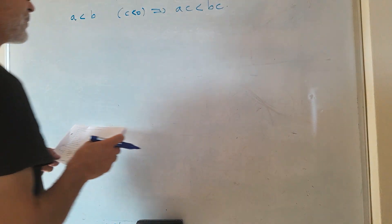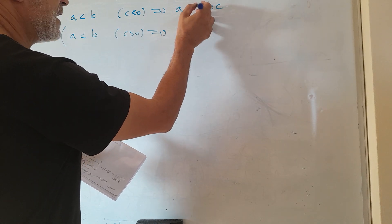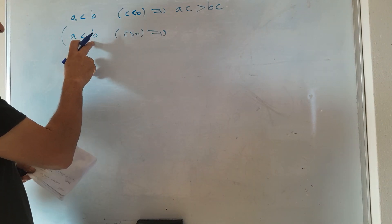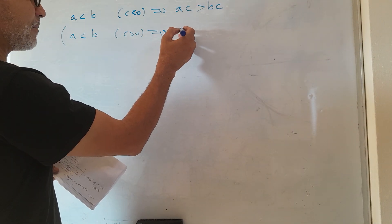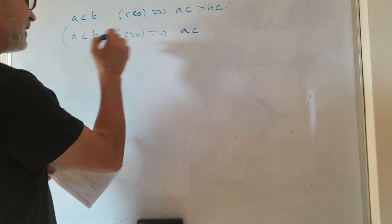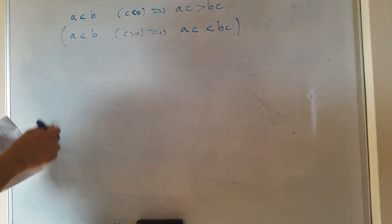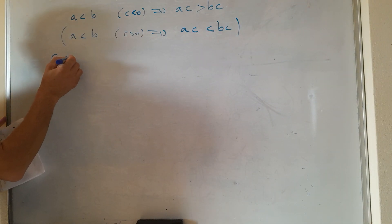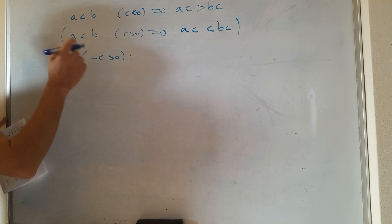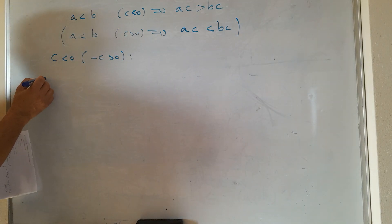We use a previous result — an axiom — which says: if a is less than b and c is greater than zero, then ac is less than bc. Since c is negative, minus c is positive, and we apply this result.